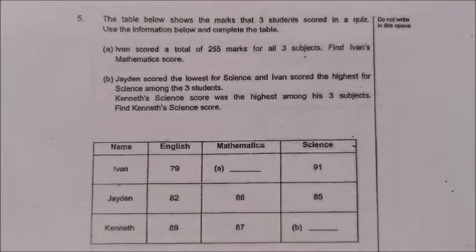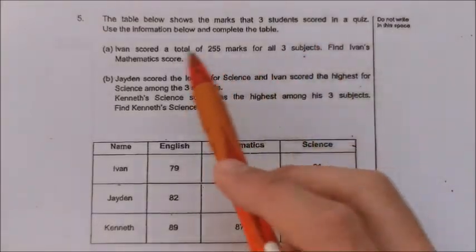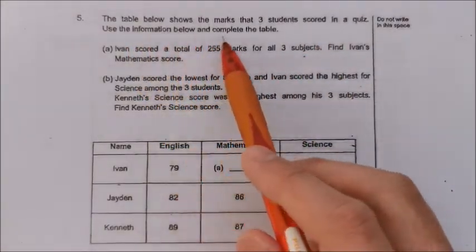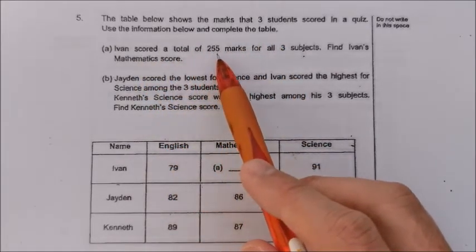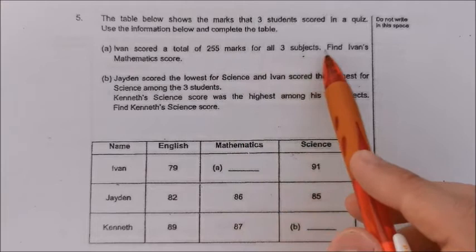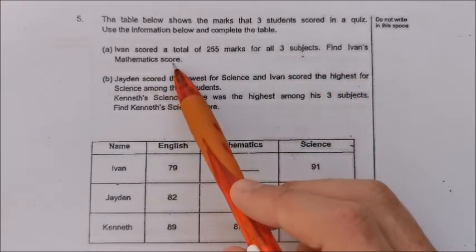The table below shows the marks that three students scored in a quiz. Use the information below and complete the table. Ivan scored a total of 255 marks for all three subjects. Find Ivan's mathematics score.